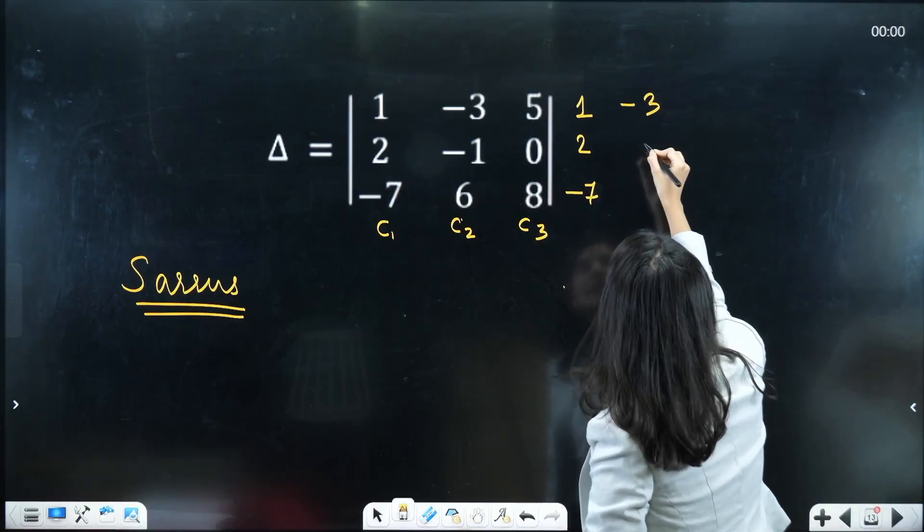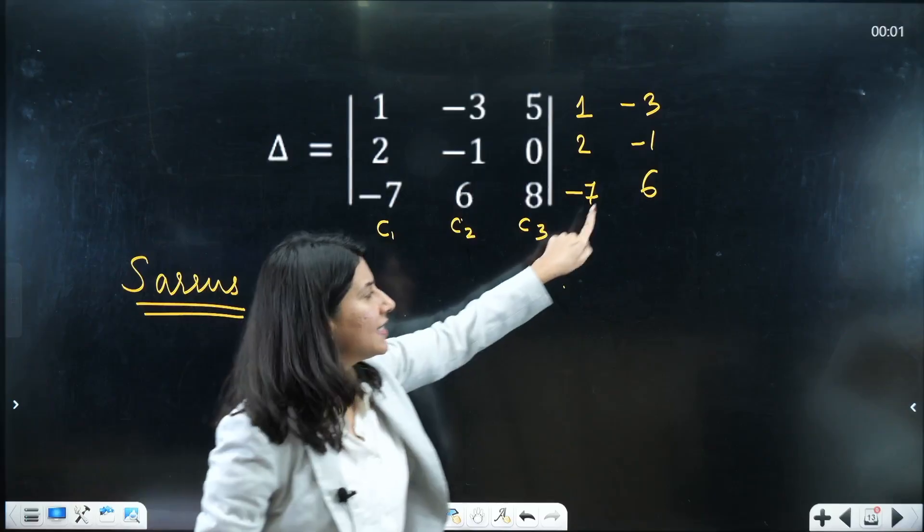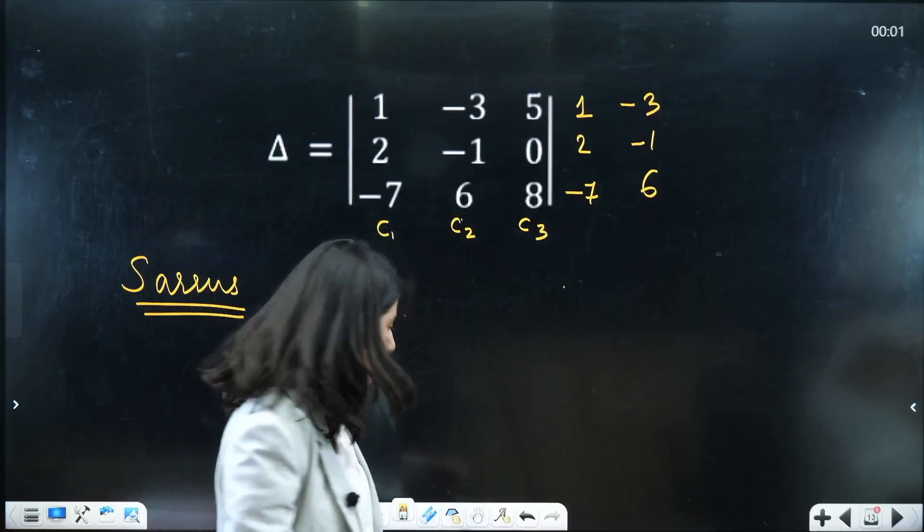The very first step is clear that what you are doing is C1, C2, C3 then C1, C2. Once you are done with that,